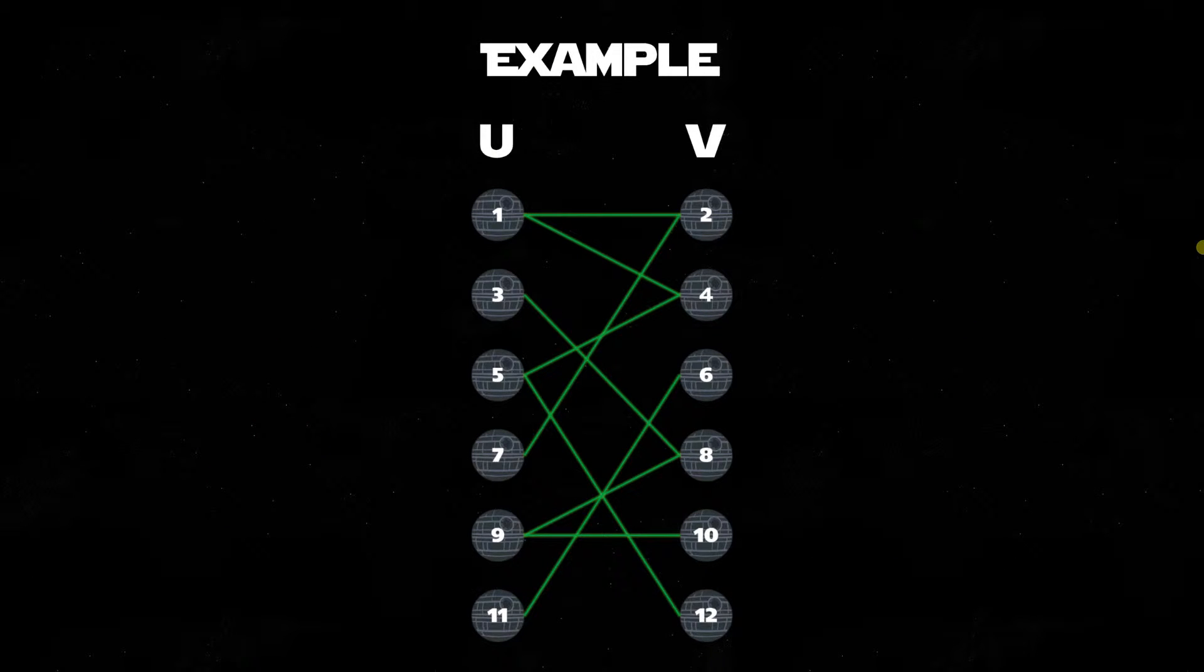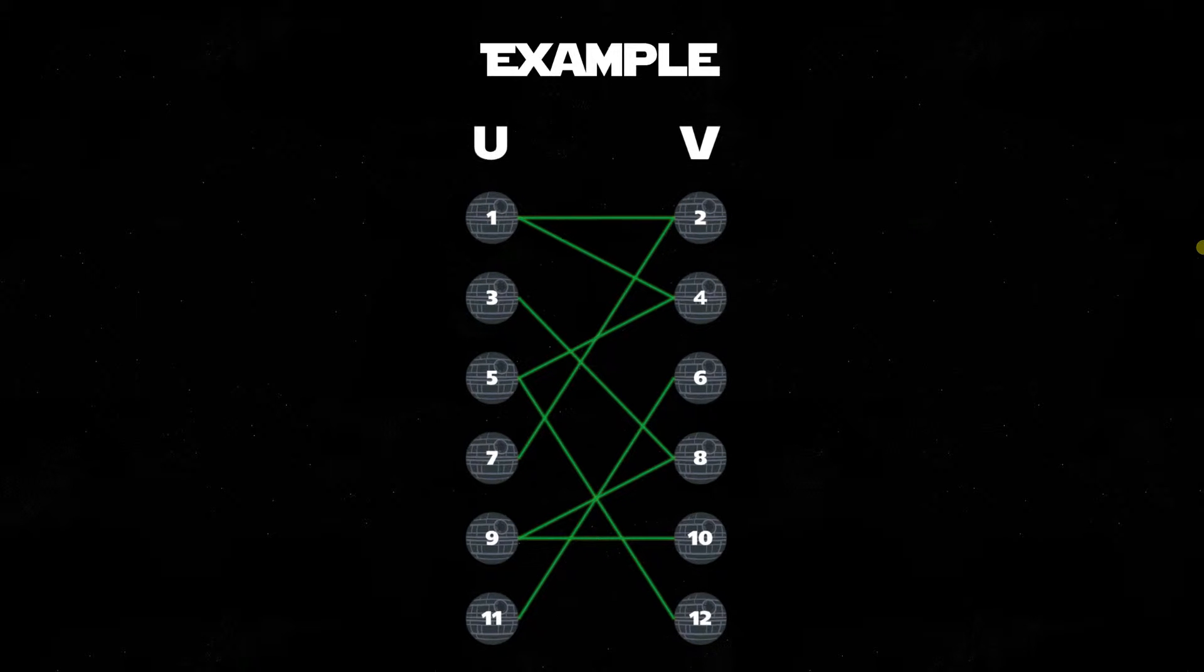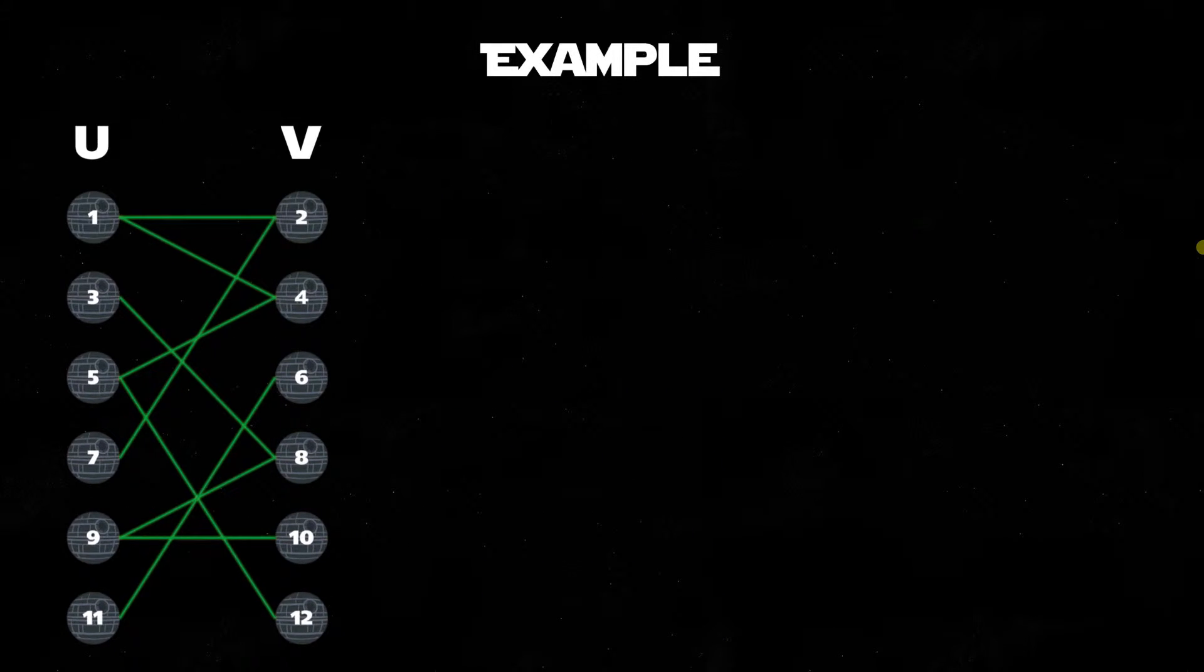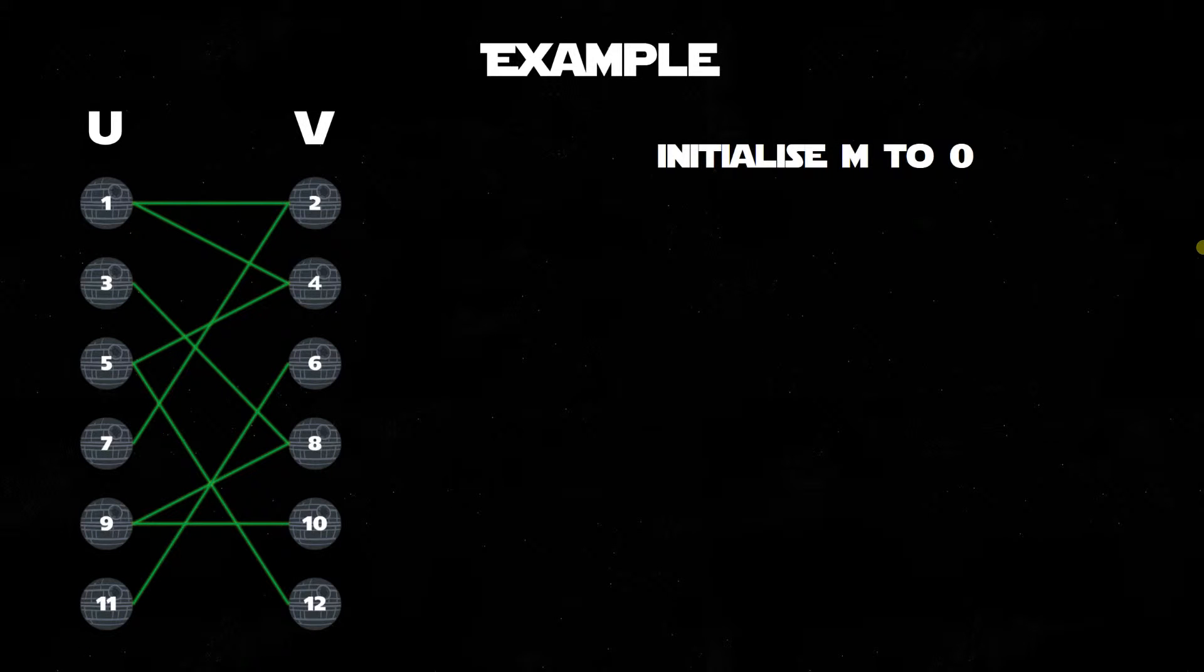For our example, we will split our bipartite graph into two sets, u and v. Before we even start on the first iteration, we initialize m, our matching set, to zero. However, you can start with a pre-existing matching, we just haven't.